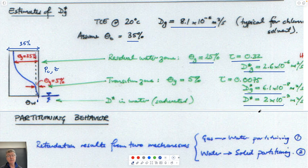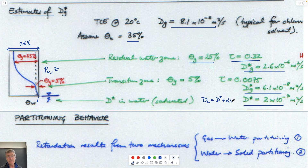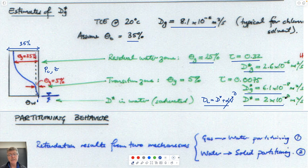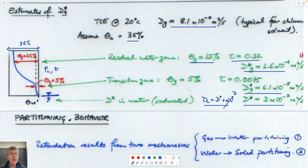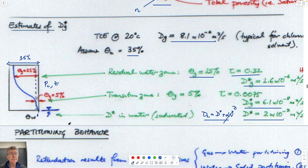Below the water table, you don't use the gas diffusion coefficient — you use the modified water diffusion coefficient: DL equals D-star plus alpha times V. If advection is zero, we just get D-star, which is still close to one order of magnitude less than the gas value. So diffusion is much slower in water than in air. That's our first parameter — we now know something about how to get the effective diffusion coefficient.